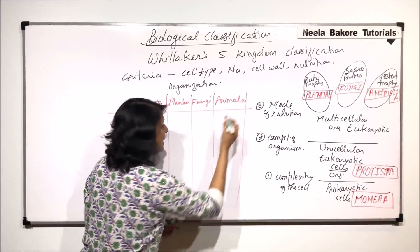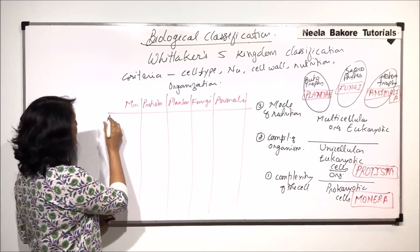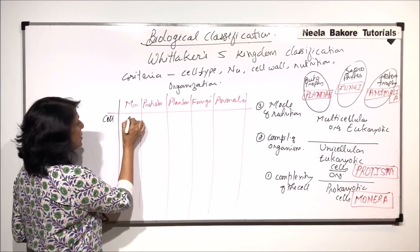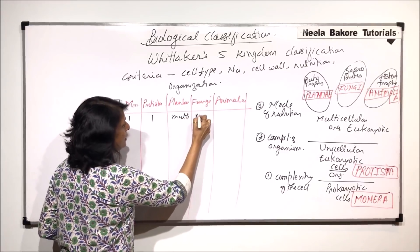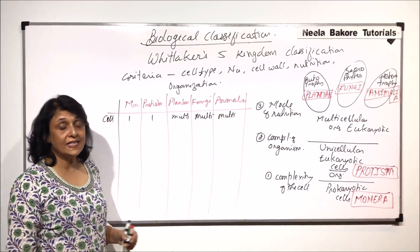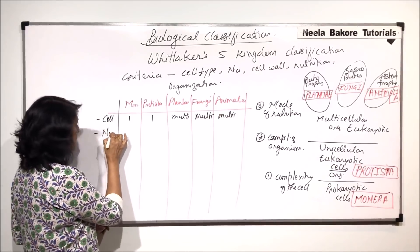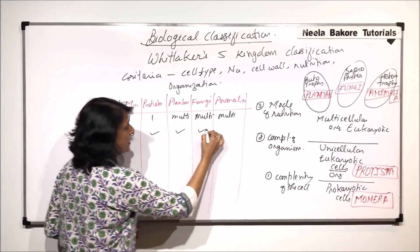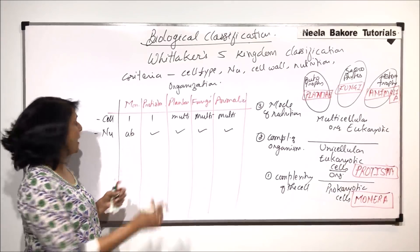Let us compare all five kingdoms on the basis of the criteria. First, whether they are unicellular or multicellular: Monera is unicellular, Protista is unicellular, while Plantae, Fungi, and Animalia are multicellular — with yeast in Fungi being an exception. Next, presence or absence of nucleus: in Monera, nucleus is absent; in Protista, Plantae, Fungi, and Animalia it is present. That is why Monera is prokaryotic and the rest are eukaryotic.